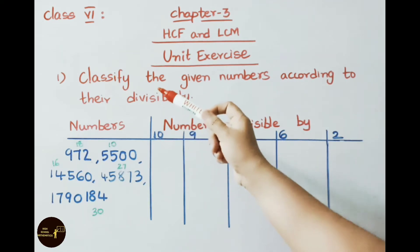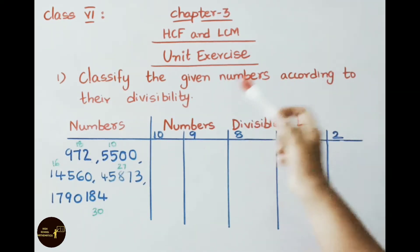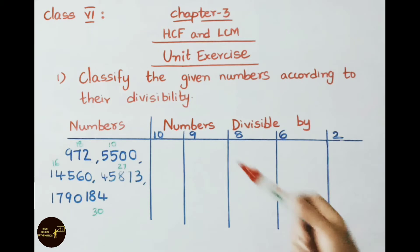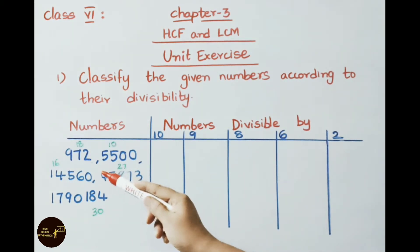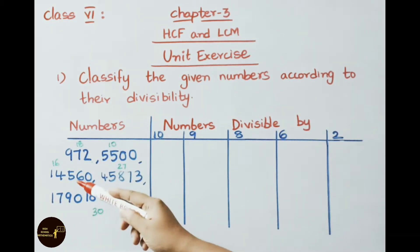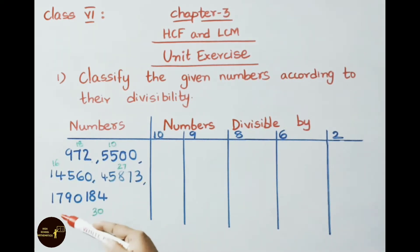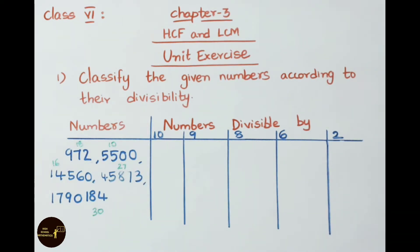See the first sum now. Classify the given numbers according to their divisibility. The numbers are 972, 5500, 14560, 45873, and 1790184. We have to separate them according to their divisibility.